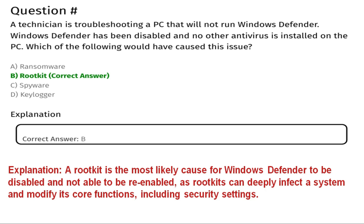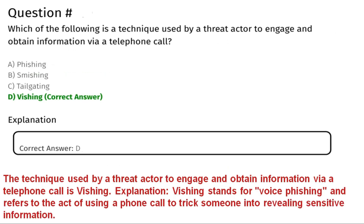Next question: Which of the following is a technique used by a threat actor to engage and obtain information via telephone call? Option A is phishing, Option B is smishing, Option C is tailgating, Option D is vishing. The correct answer is Option D, vishing. Vishing stands for voice phishing and refers to the act of using a phone call to trick someone into revealing sensitive information.